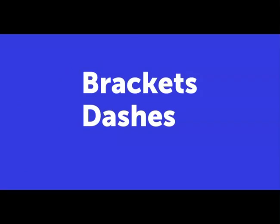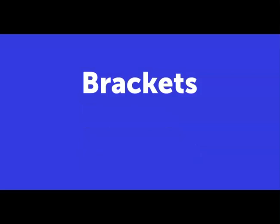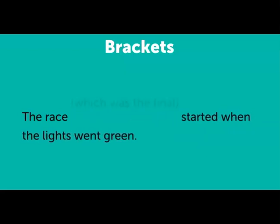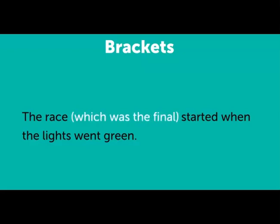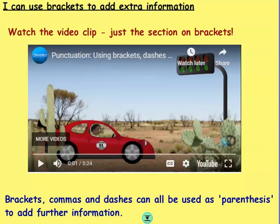The race started when the lights went green. This sentence describes in a simple way what happened at the desert race, but you might want to add more information. You can do this with the help of brackets, dashes, or commas. Brackets have been used around the new information. You might have noticed the video clip mentioned that you can use brackets, commas, and dashes as parentheses to add further information.